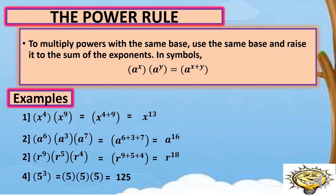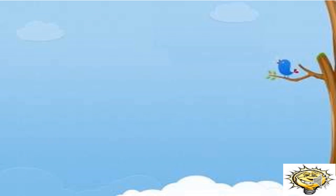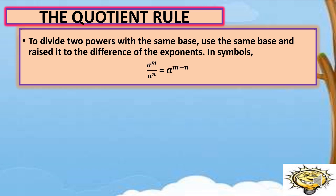So let's proceed to the next rule. The third rule is about the quotient rule. It states that to divide two powers with the same base, use the same base and raise it to the difference of the exponents. In symbols, a raised to m over a raised to n is equal to a raised to m minus n. So if you have the same bases, you just subtract their exponents. To understand better, let's have some examples.